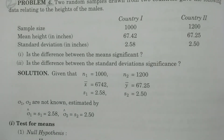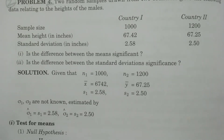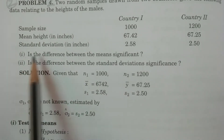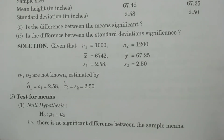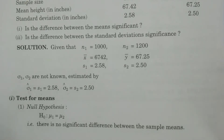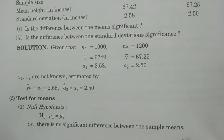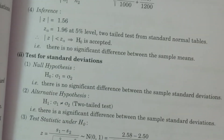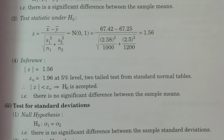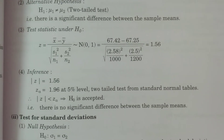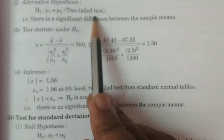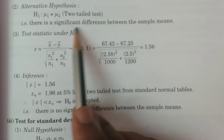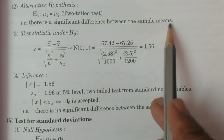Now I start the two particular tests. First question: Is the difference between the means significant? For the test for means — Point 1, Null hypothesis H0: mu 1 = mu 2, that is, there is no significant difference between the means. Alternative hypothesis H1: mu 1 ≠ mu 2 (two-tailed test), meaning there is a significant difference between the sample means.